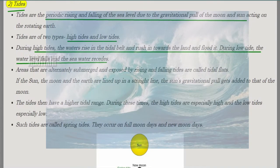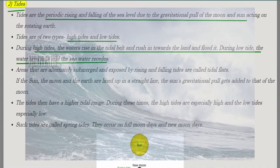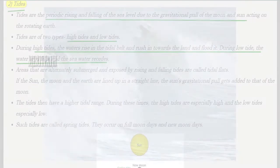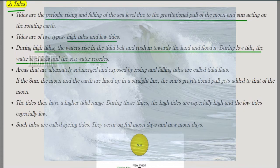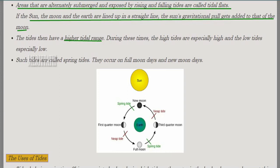Next are tides. The periodic rising and falling of the sea level due to the gravitational pull of the moon and sun acting on the rotating earth causes tides. Tides are of two types: high tides and low tides. During high tides, water rises and rushes towards the land, flooding it. During low tides, the water level falls and sea water recedes. Areas alternately submerged and exposed by rising and falling tides are known as tidal flats.